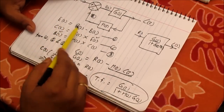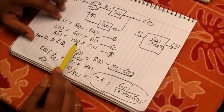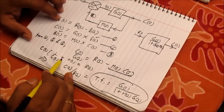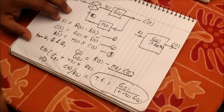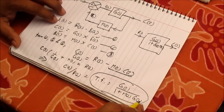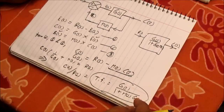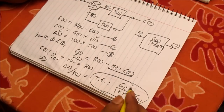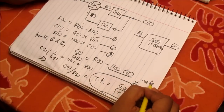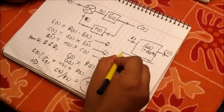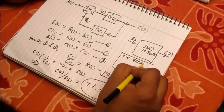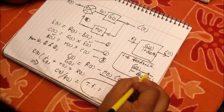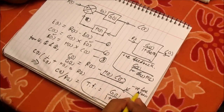Now suppose we have a positive feedback system. In equation 1, E(S) = R(S) + B(S). When we eliminate the terms and move them to the other side, the sign becomes negative, giving us 1 minus H(S)·G(S) in the denominator. So for positive feedback, the transfer function is G(S) / (1 - G(S)·H(S)). In summary: negative feedback gives a plus sign in the denominator, and positive feedback gives a minus sign.